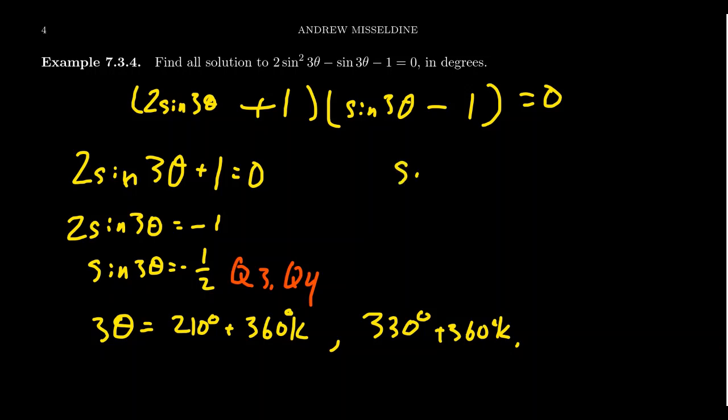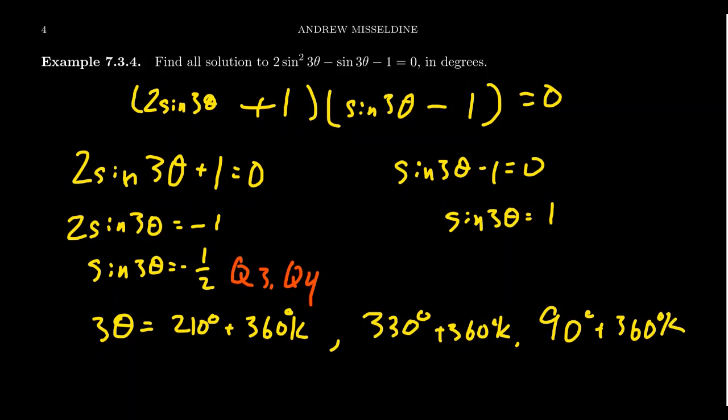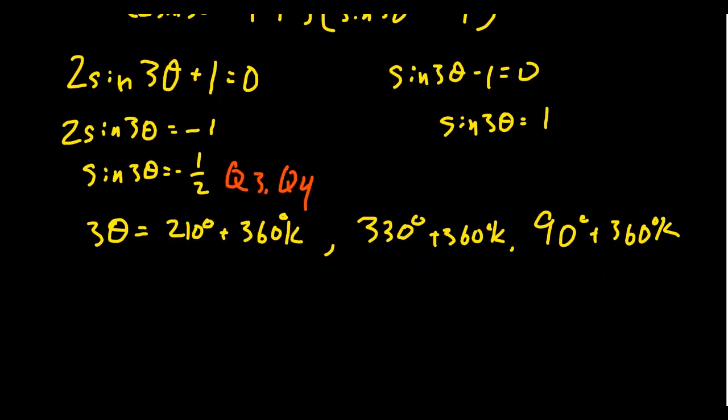Sine 3 theta minus 1 is equal to 0. Well, if you add 1 to both sides, you get sine of 3 theta is equal to 1. When is sine equal to 1? That happens at the top of the unit circle, that happens at 90 degrees, plus, of course, 360k. So we have three general solutions to when sine equals negative 1 half or 1, but we need to divide all of this by 3.